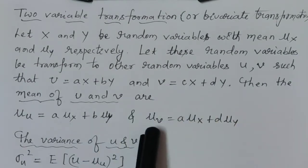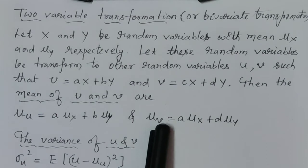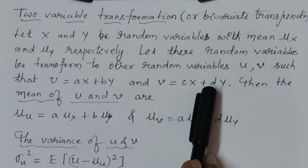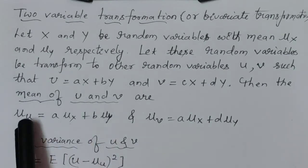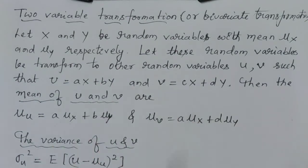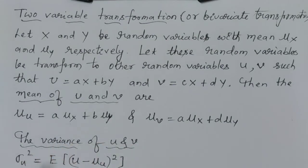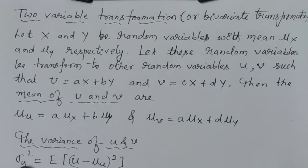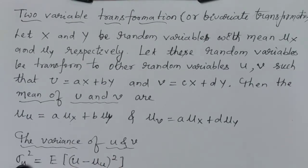If v is equal to cx plus dy, the mean value of v is equal to c into mean value of x plus d into mean value of y. Next, we find the variance of u and v. The variance is denoted by sigma u squared, which is the expected value of u minus the mean value of u, whole squared.